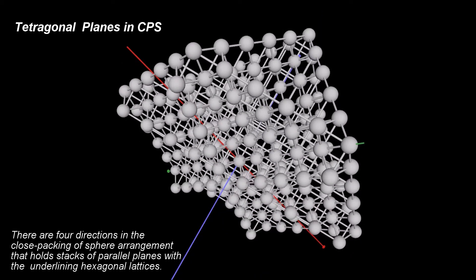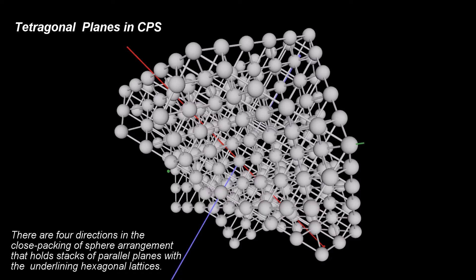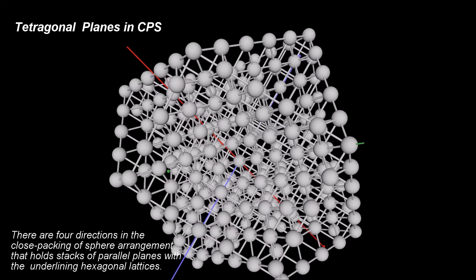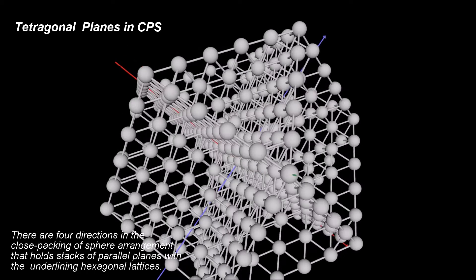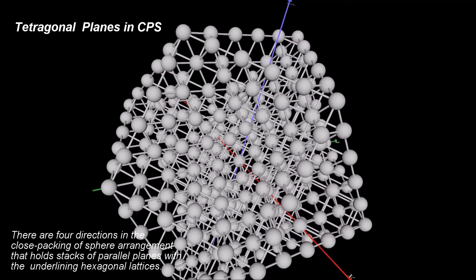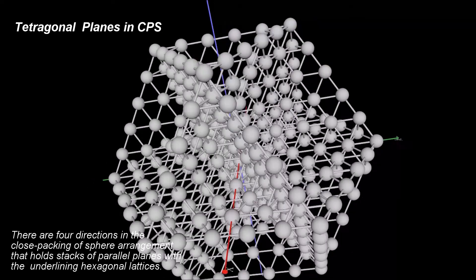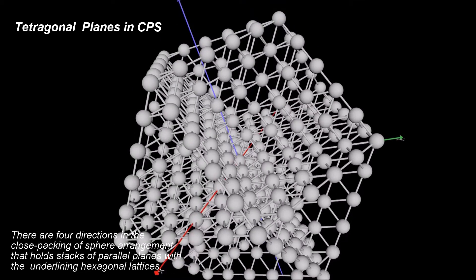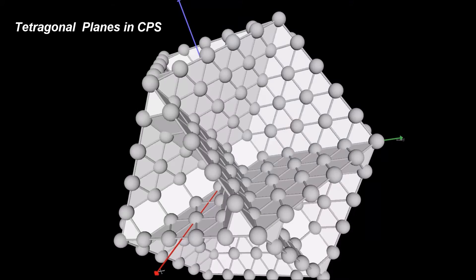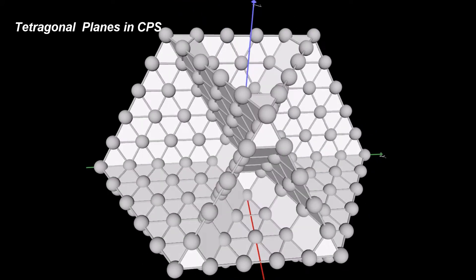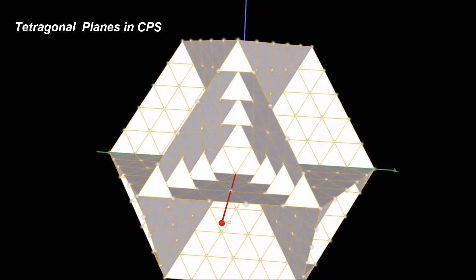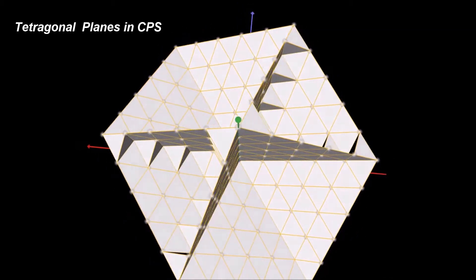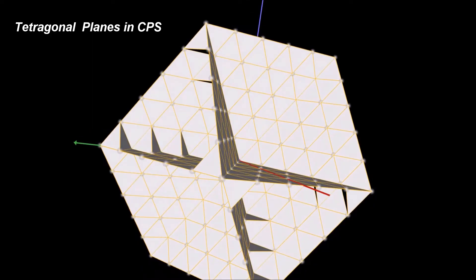A similar investigation of the CPS arrangement, as the one presented in the previous section, reveals that there are four more directions in the Close Packing of Spheres that are defined by parallel planes. All these planes have a hexagonal pattern. For consistency with the orthogonal planes defined already, we will introduce a new term to express the relationships among the directions of these four sets of planes. We will say that these four planes are tetragonal to each other.